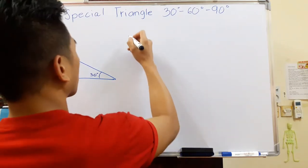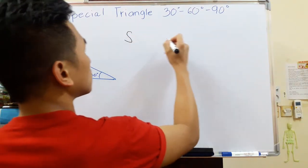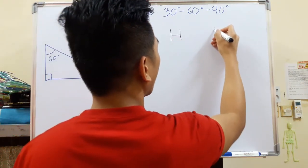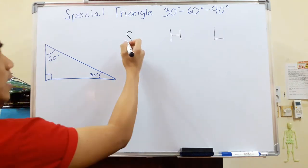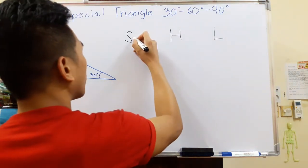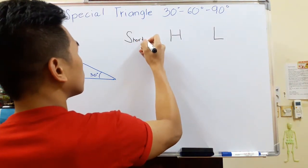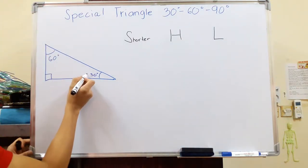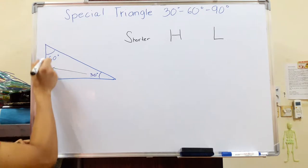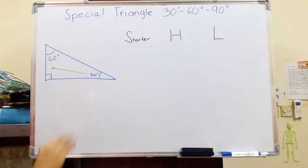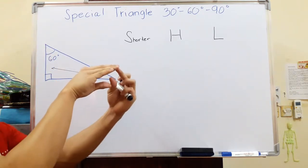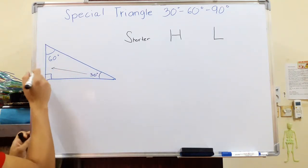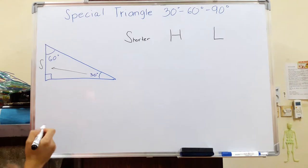First, we're going to have to label them into three parts: the S, the H, and the L. What does S mean? It means the shorter side. As you can see here, the shorter side is going to be opposite of 30 degrees. As the angle is smaller, the opening or the length of the sides on the opposite side will be shorter. So this is what we call the shorter side.